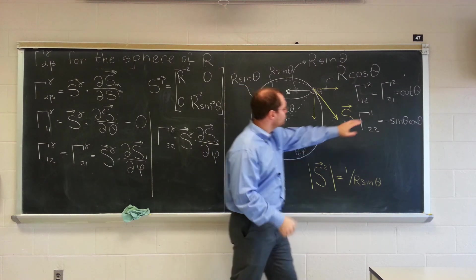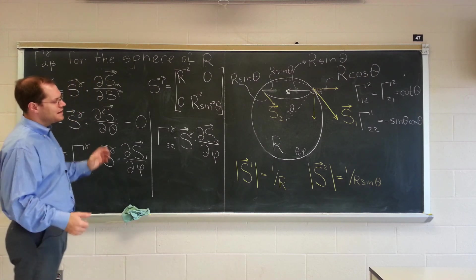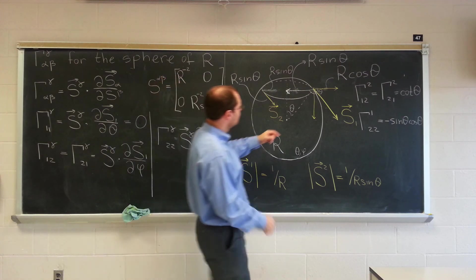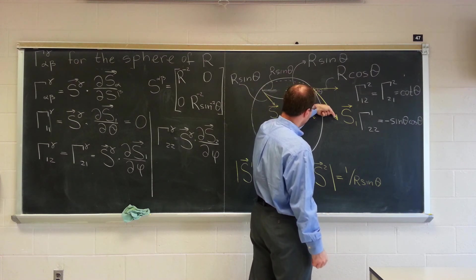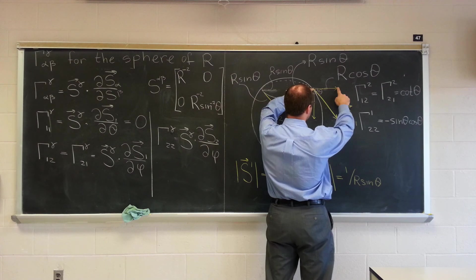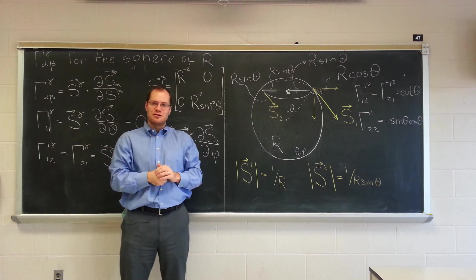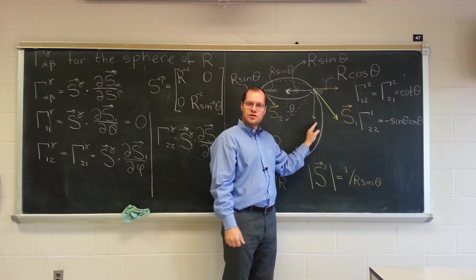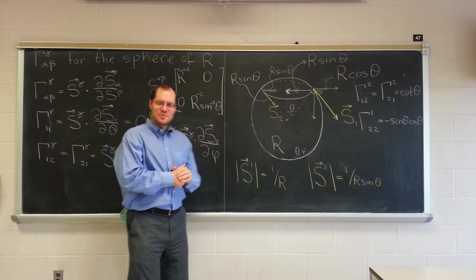It appears that none of these Christoffel symbols depend on R. I hope that's correct. Let's just review why this one was cotangent theta, just to make sure it doesn't depend on R. This was of length R, so this component was R sine theta, and then we multiply, the R's cancel. Doesn't seem to be dependent on R. So there you go, we now have our Christoffel symbols for the sphere of radius R, referred to the standard spherical angles theta and phi. Great. Thank you very much, see you next time.